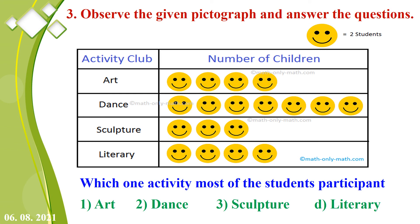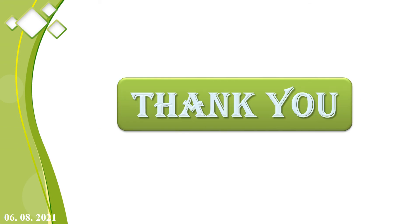Third: observe the given pictograph and answer — one picture represents 2 students. Which activity do most students participate in? The answer is dance, because for dance 7 pictures into 2 equals 14 students. Thank you, children!